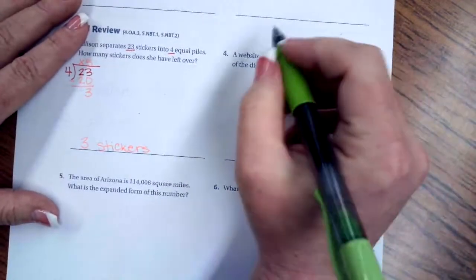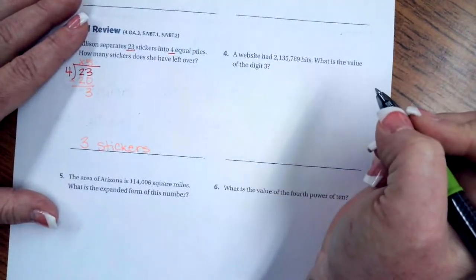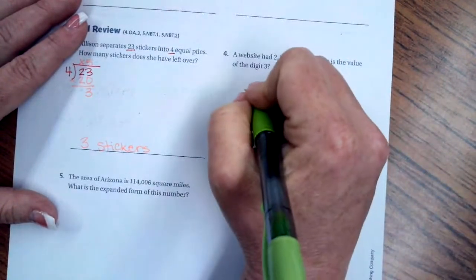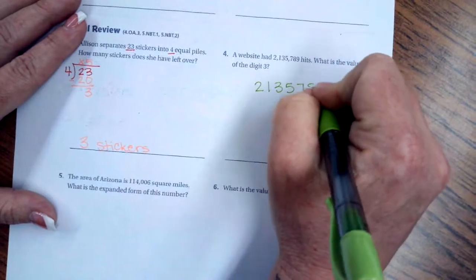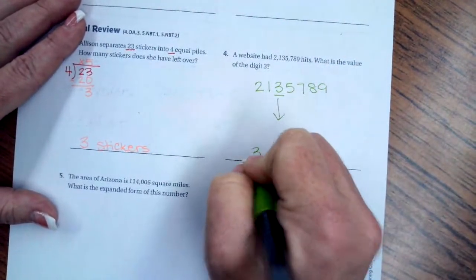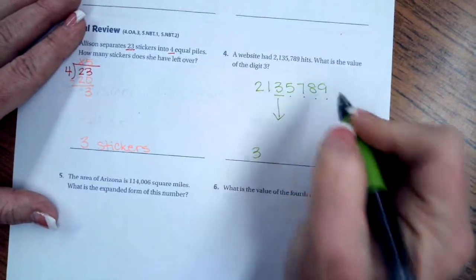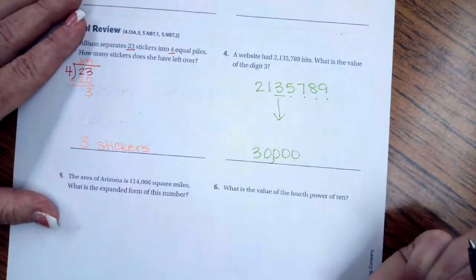All right, a website had 2,135,789 hits. What is the value of the digit 3? So I'm going to rewrite my numbers here. I'm going to underline my 3. I'm going to drop it down. Every number afterwards becomes a 0. So I have four 0's. That leaves me with 30,000.